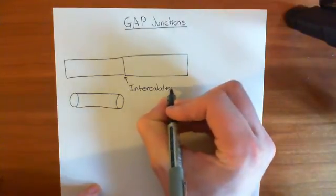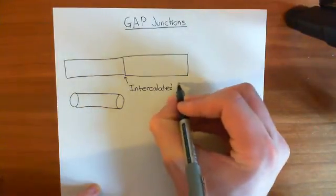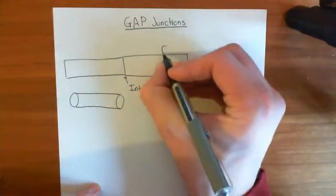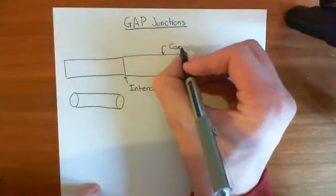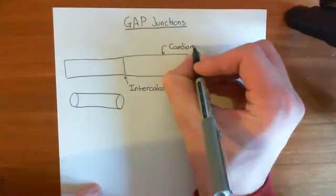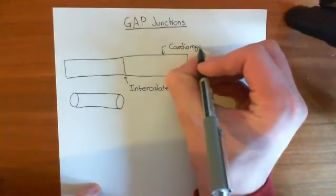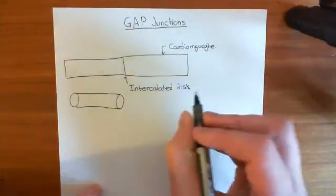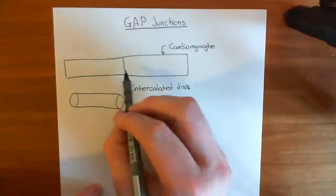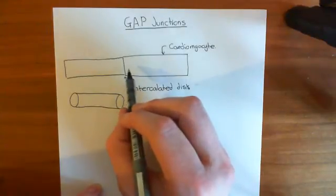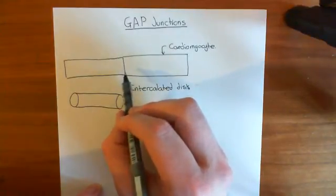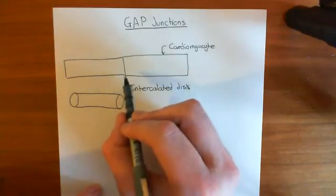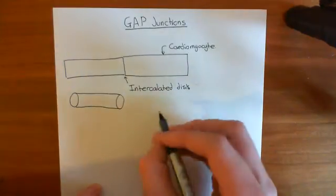This intercalated disc, this junction between two cardiomyocytes - I'll just label up the cardiomyocytes. So this is a cardiomyocyte, which is short for cardiac myocyte. The actual connections that you form between two cardiac muscle cells - some of those are gap junctions.